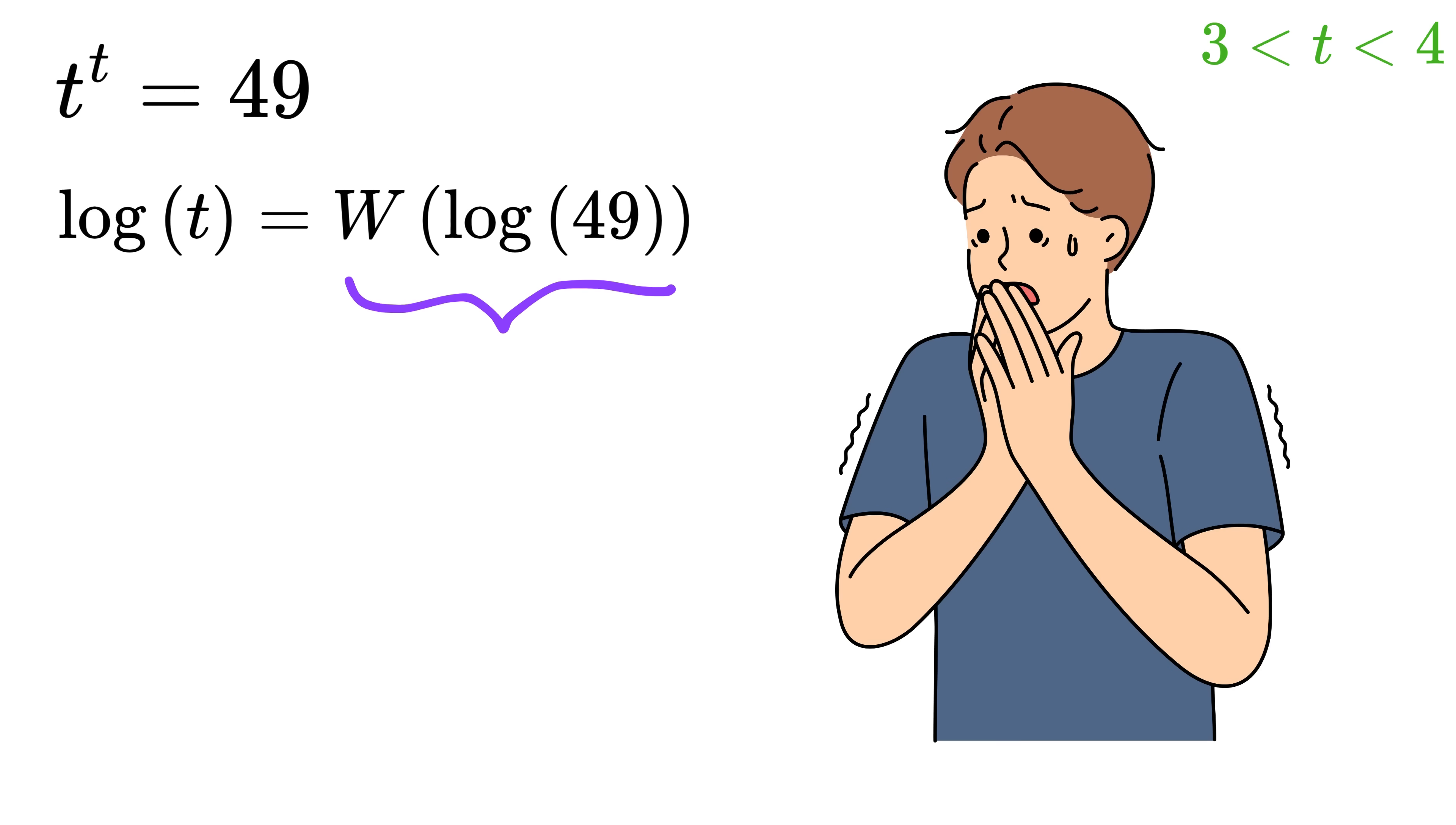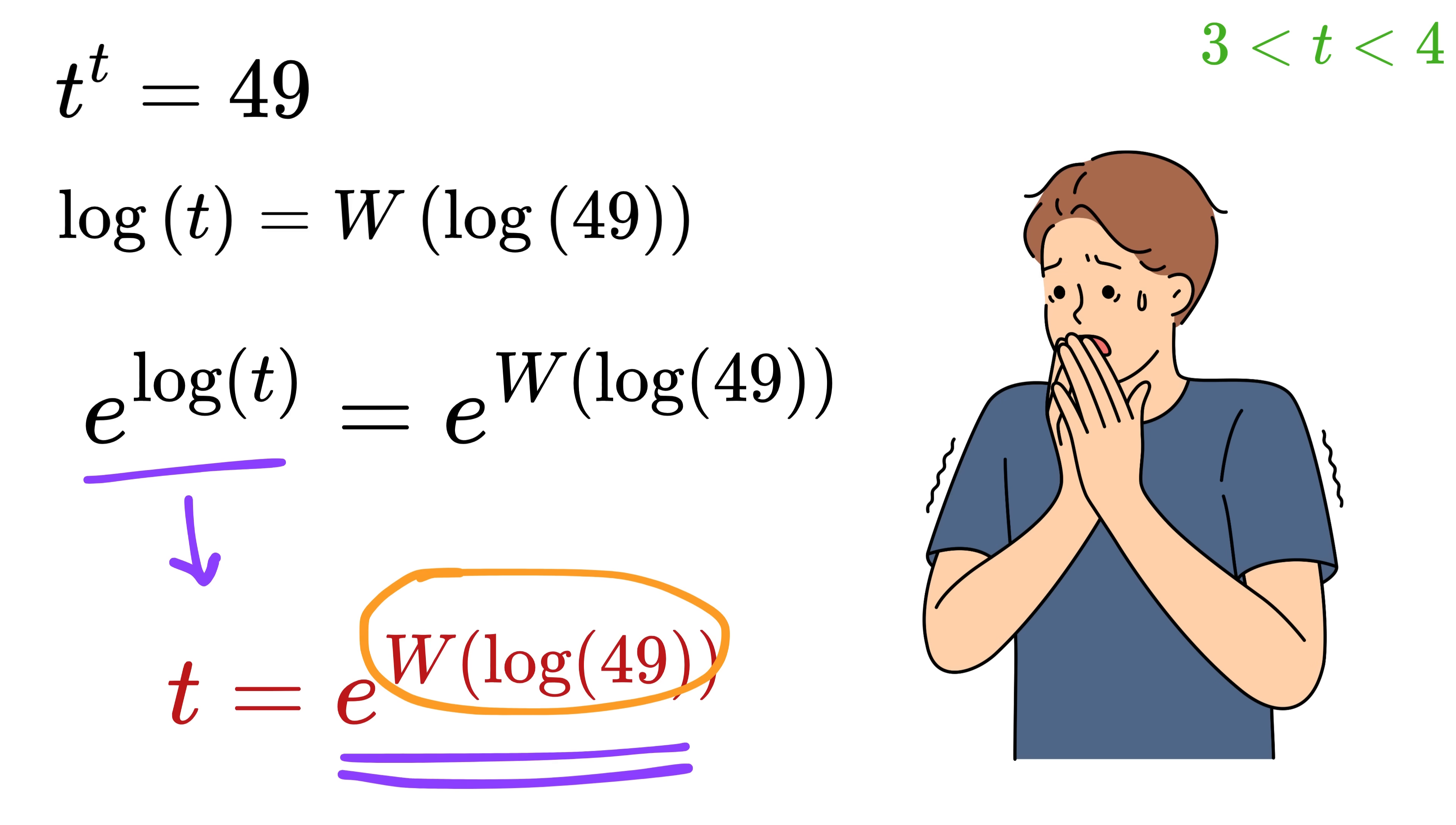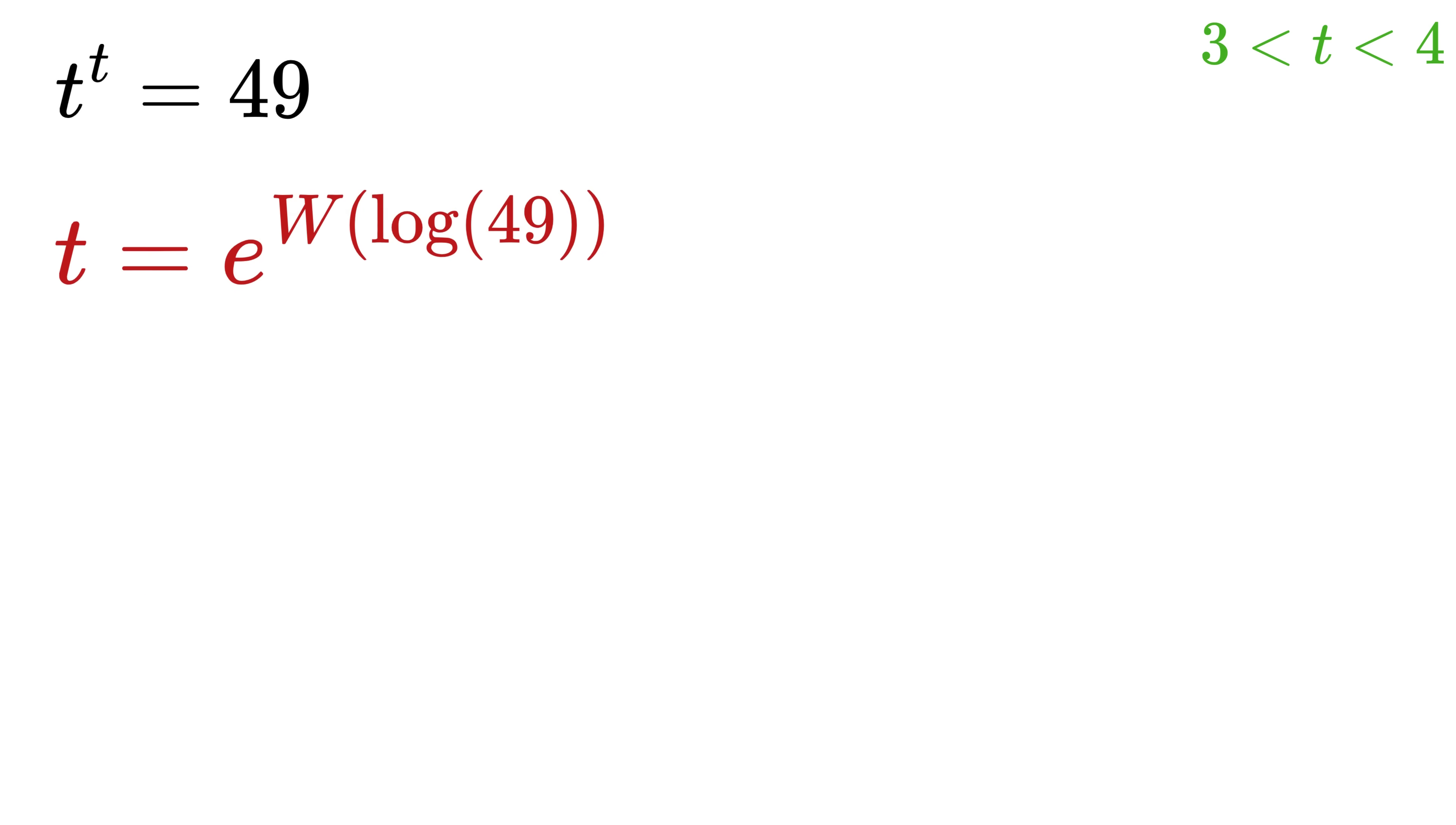Do not be scared about this right-hand side. This log of 49 is a constant, and this is also a constant. Now, we do not need the log of t, but we need the value of t. So to solve it further, we will exponentiate both sides. This will give us e raised to the log of t equals e raised to W of log of 49. Now, e raised to the log of t is t, and this is our right-hand side. Again, do not be scared of this term. As this was a constant, e raised to this term is also simply a constant. You can leave the answer like this.